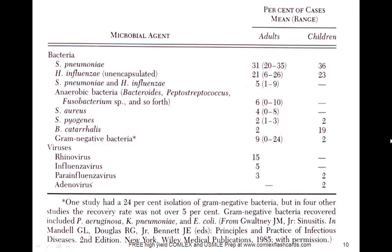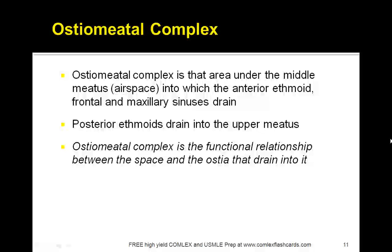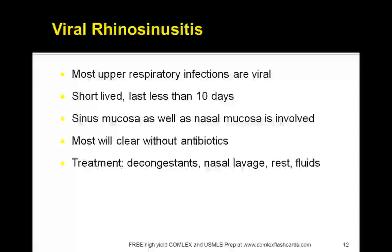Let's review the major microbial agents causing sinusitis. If it's bacterial, it's mainly Streptococcus pneumoniae or H. influenzae. Viral causes include rhinovirus or influenza virus. The osteomeatal complex is the area under the middle meatus into which the anterior ethmoid, frontal, and maxillary sinuses drain. The posterior ethmoids drain into the upper meatus. The osteomeatal complex represents the functional relationship between the space and the ostia that drain into it.